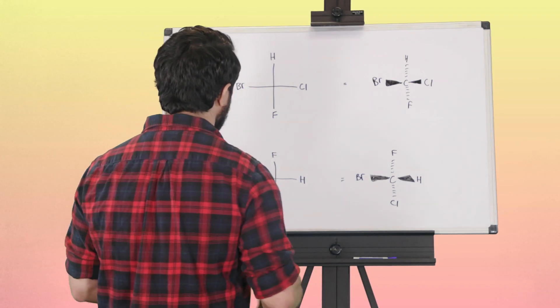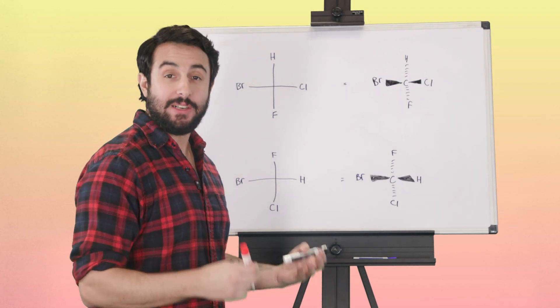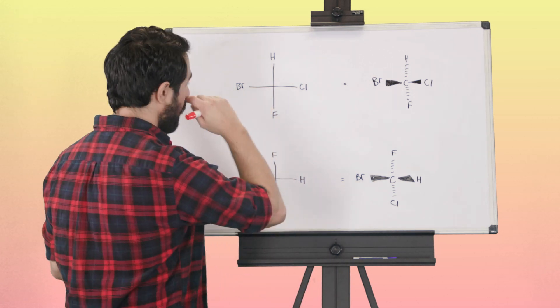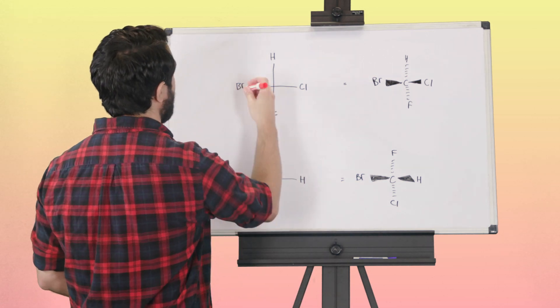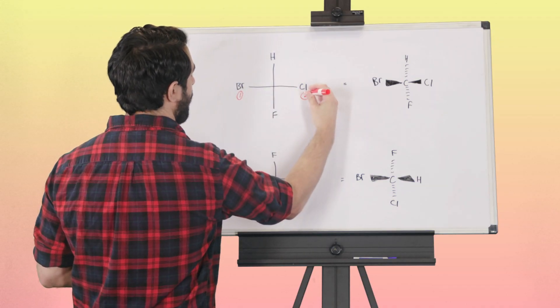First, we just have to remember: assign priority based on atomic number. The highest atomic number, that's bromine, so that'll be one. Two is chlorine, so that'll be two. F is next, that'll be third, and then hydrogen is fourth.